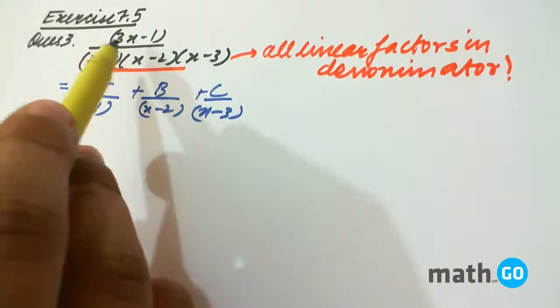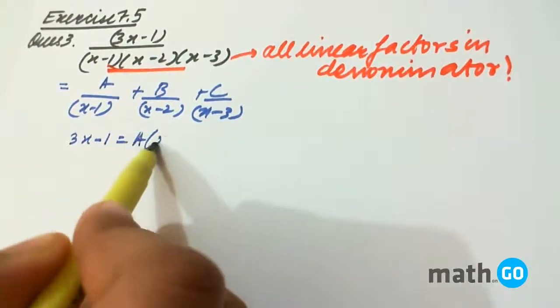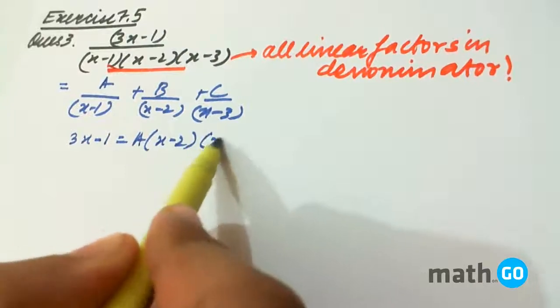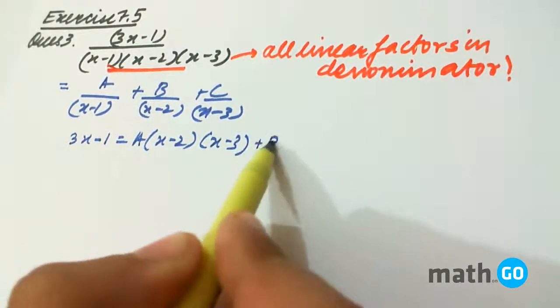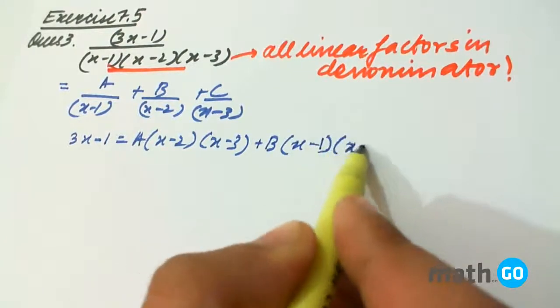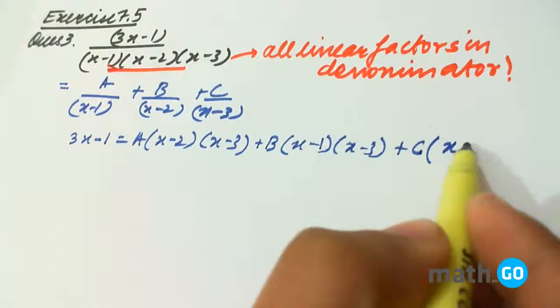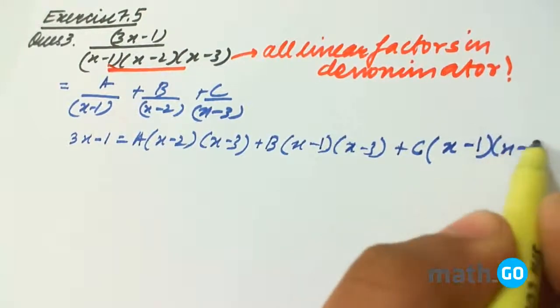So we compare on both sides. We get 3x-1 equals to A into x-2 into x-3, plus B into x-1 into x-3, plus C into x-1 into x-2.